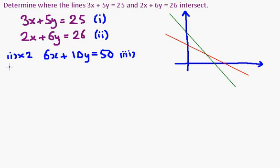And the second equation, equation (ii), I'm going to multiply that one by 3. So I'm going to get 6x, 3 times 6y is 18y, and 3 times 26 is 78. And that will be my equation (iv).